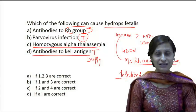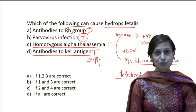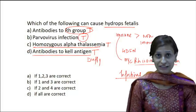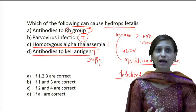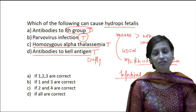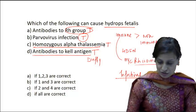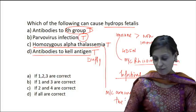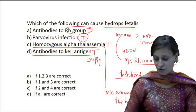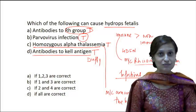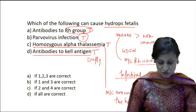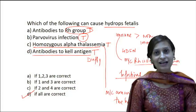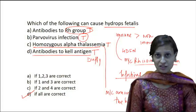Option C — homozygous alpha thalassemia — is again true. Anemia in the baby can cause hydrops fetalis, and among the hematological causes of non-immune hydrops, this is the most common. Since all four statements are correct, the answer is D — if all are correct.